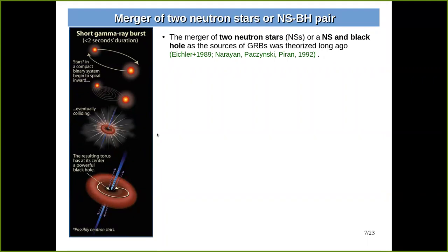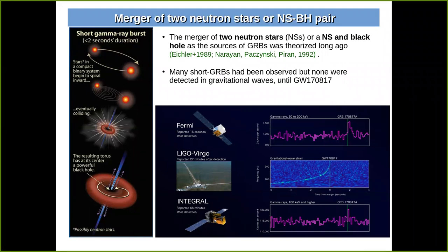For short GRBs, it was long theorized that they come from the merger of two neutron stars in a binary orbit, or the merger of a black hole and a neutron star. The binary orbit shrinks over time as the objects emit gravitational waves, they merge, produce a compact object, and launch bipolar outflows as merger debris accretes onto the compact source via an accretion disk. We had to wait for the development and operation of gravitational wave detectors, and finally in August 2017 we got our confirmation when gravitational waves were detected from a binary neutron star merger in coincidence with a short gamma-ray burst detected by Fermi and INTEGRAL.